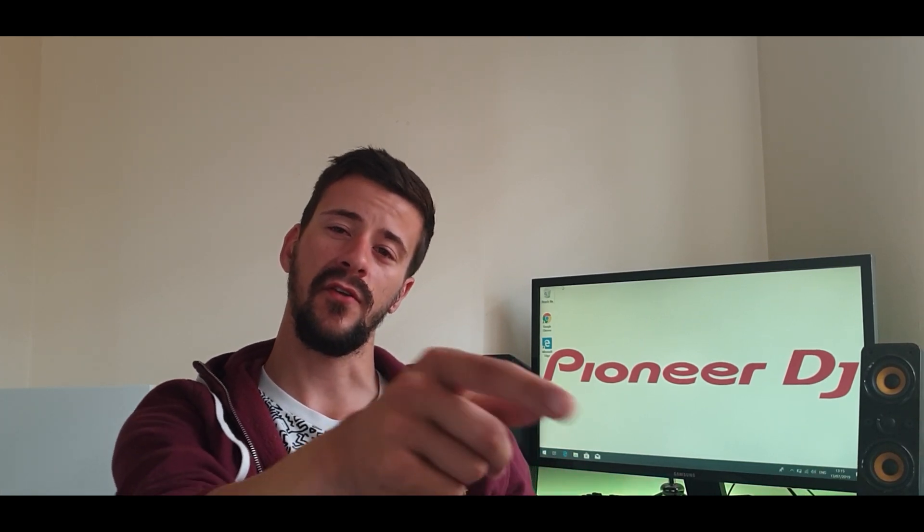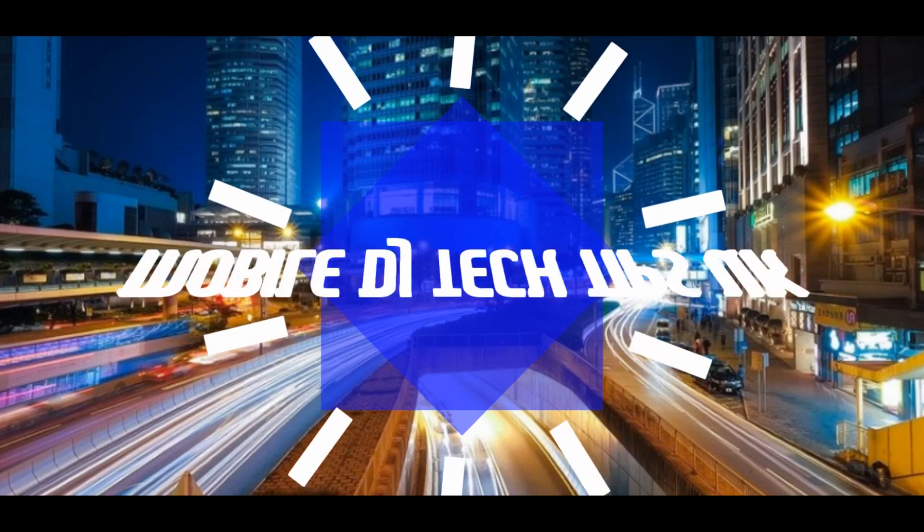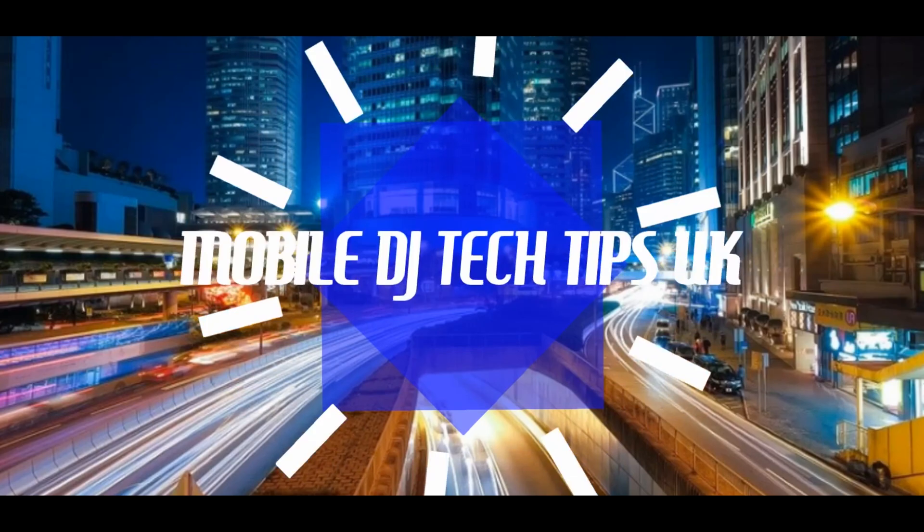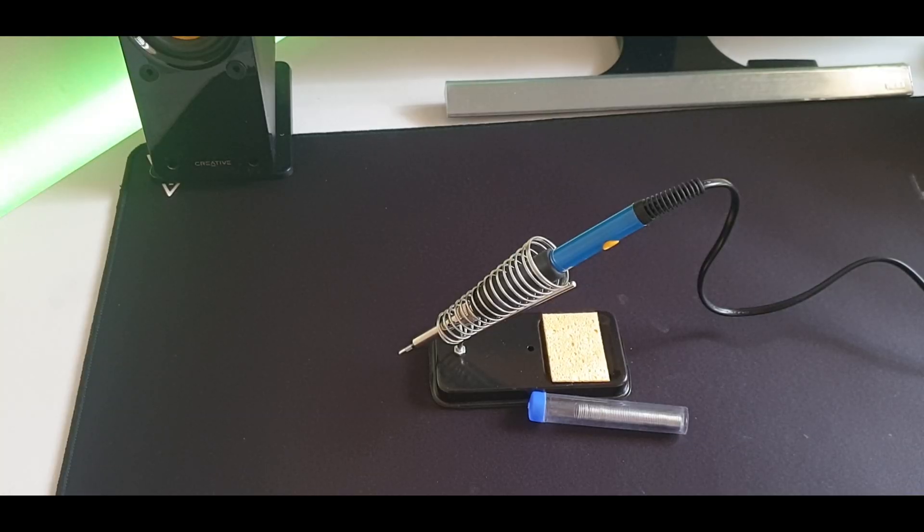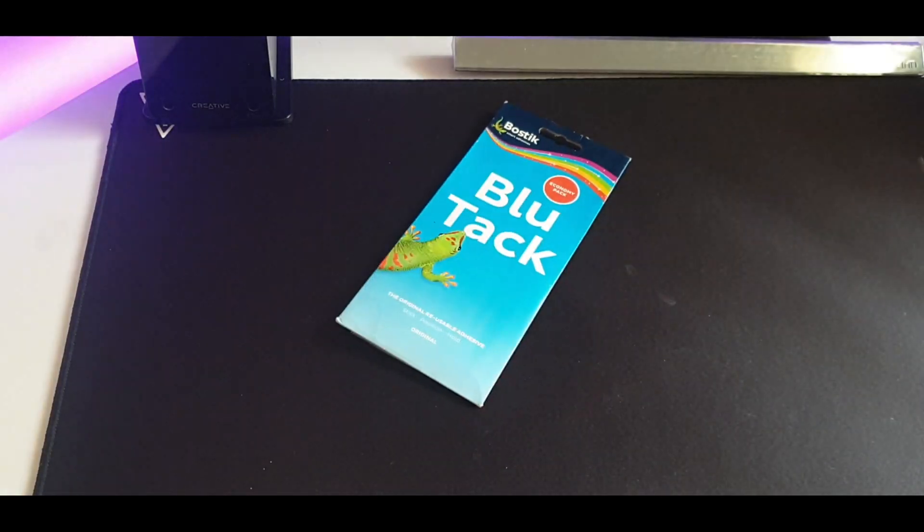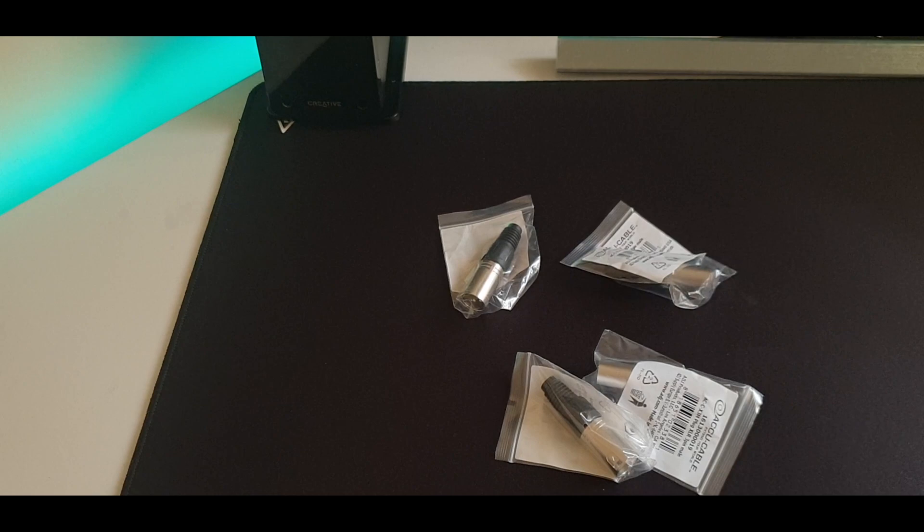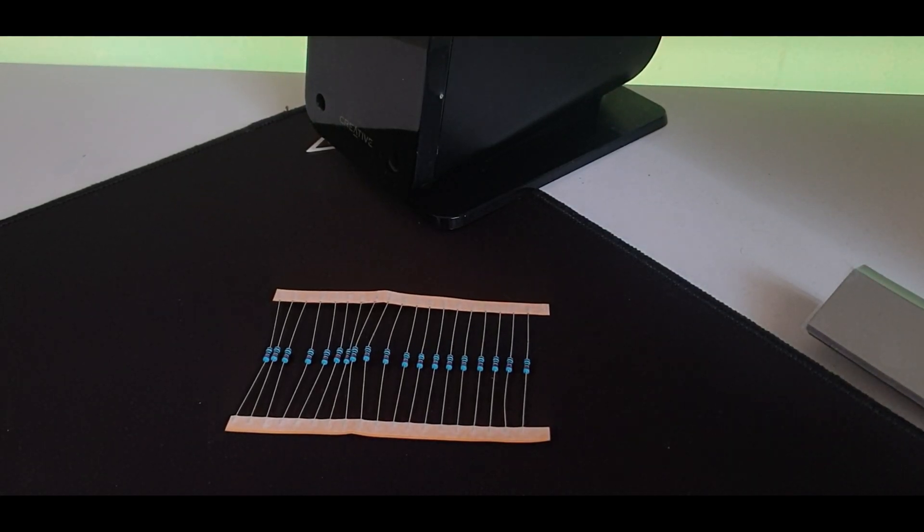So without further ado, let's get straight into the video. To make your own DMX Terminator you're gonna need a couple of things: a soldering iron and solder, some blue tack, three-pin male XLR plugs, and 120-ohm resistors. If you don't know what they look like, they have brown, black, and brown bands around them.